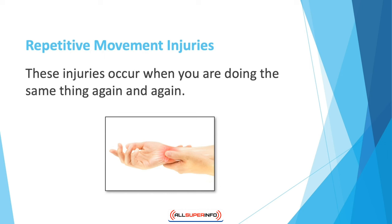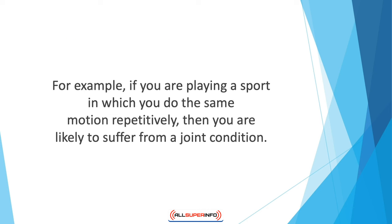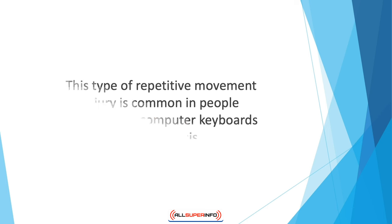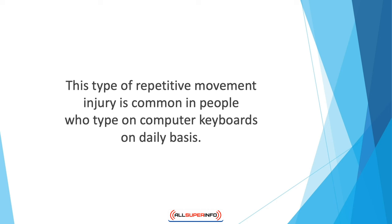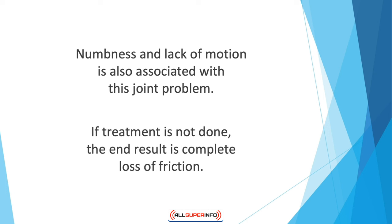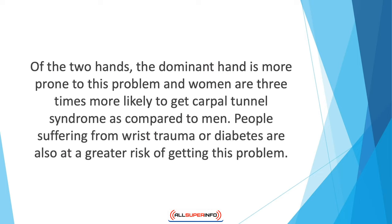Repetitive motion or stress injuries can be permanent or temporary injuries that cause damage to nerves, tendons, or ligaments. They occur when you perform the same action repeatedly. Carpal tunnel syndrome is a common form of such injury, caused by a disorder of the tunnel running from the forearm to the wrist. When ligaments and tendons in this area get compressed, swelling and pain are experienced — common in people who type on computer keyboards daily. This injury causes pain, numbness, and lack of motion.